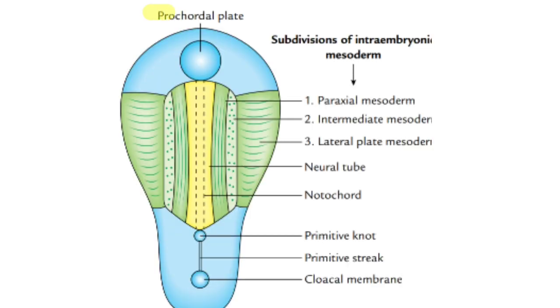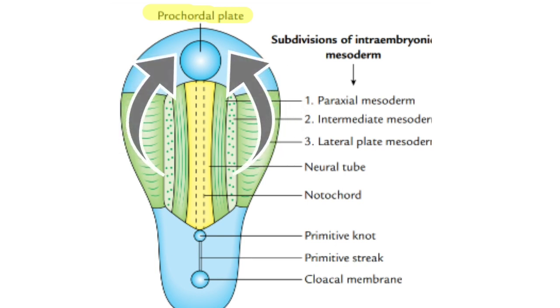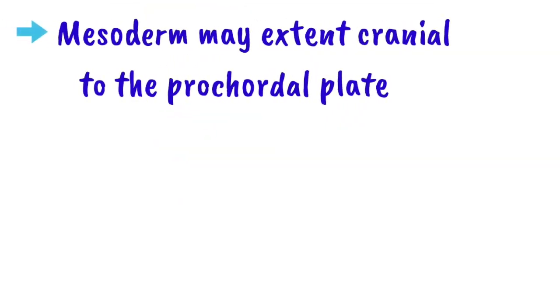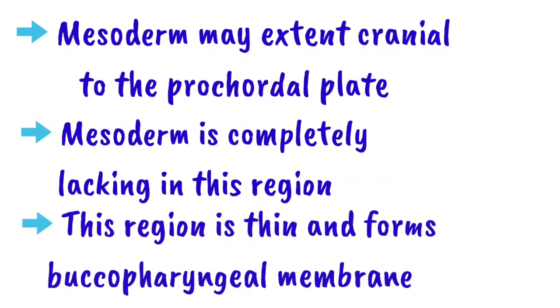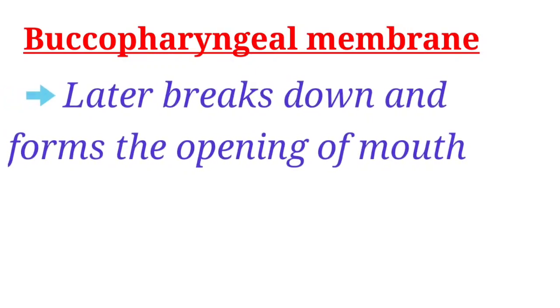Considering the prochordal plate: mesoderm may extend cranially up to the prochordal plate, but the prochordal plate consists of ectoderm and endoderm only, with mesoderm completely lacking in this region. This relatively thin area forms the buccopharyngeal membrane, which later breaks down to form the opening of the mouth.